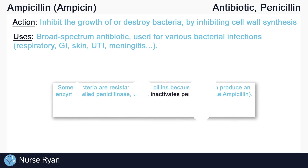Some bacteria are resistant to penicillins because they can produce an enzyme called penicillinase, which inactivates penicillins. So keep in mind that ampicillin can only be used on ampicillin-susceptible bacteria.